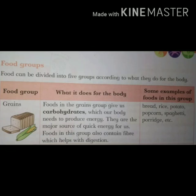Food can be divided into 5 groups according to what they do for the body. Food ko body mein unki working ke according 5 groups mein divide kiya gya hai. We have 3 columns here: Food Groups, What it does for the body, and some examples of foods in this group.